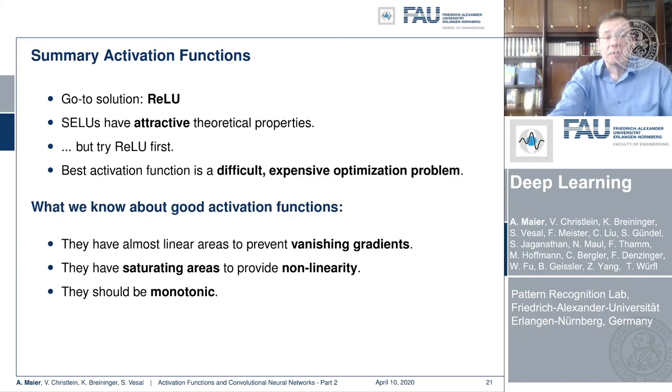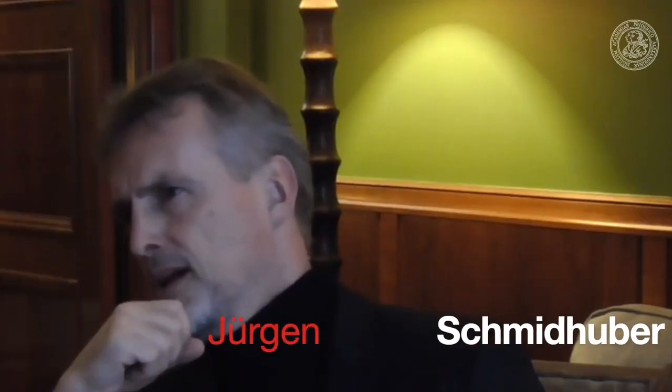So what we do know about good activation functions is what we know from our observations so far. They have almost linear areas to prevent vanishing gradients. They have saturating areas to provide non-linearity. And they should be monotonic. This is really useful for our optimization. And that was my 1987 diploma thesis, which was all about that.